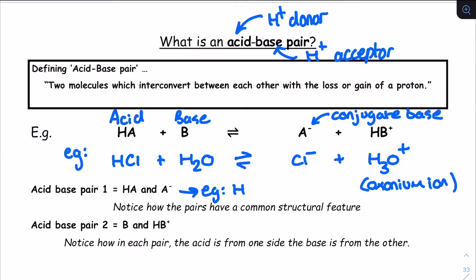Then, from right to left, the Cl- is accepting a proton to form the HCl. This makes the HCl and the Cl- an acid-base pair.